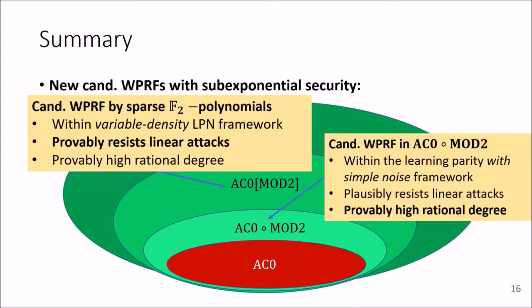Our second result is a candidate weak PRF in AC0 on top of parities. This is the currently only standing candidate which can be conjectured to have full sub-exponential security. This candidate is within the learning parity with simple noise framework. It plausibly resists linear attacks and it has a provably high rational degree.